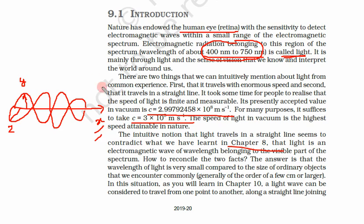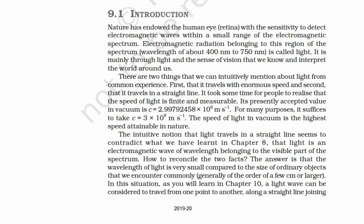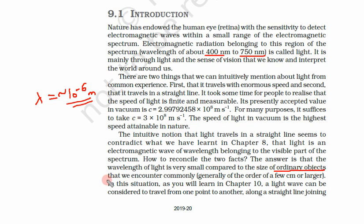But why are we taking the approximation that light is a ray? The reason is that the size of daily objects is very large. We know the wavelength of light, lambda, is equal to 400 nanometers to 750 nanometers — so this is of the order of 1 micron, or 10⁻⁶ meters. The size of ordinary objects we see in daily life is generally a few centimeters or larger.